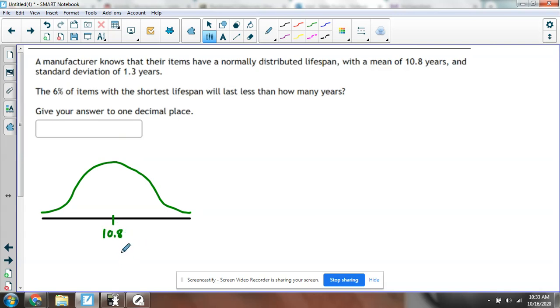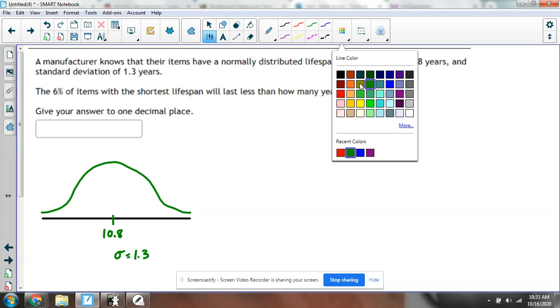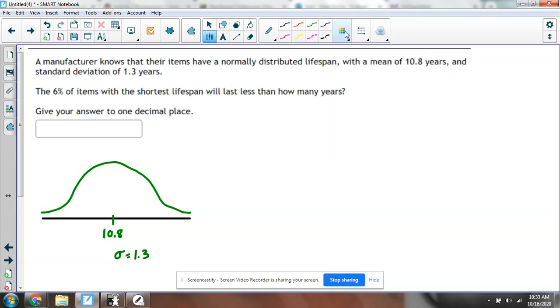I'm just going to write sigma down here so I know it's 1.3. It says the 6% of items with the shortest lifespan will last less than how many years? So the bottom 6%, I'm going to draw a vertical line here, call that x. I want to know what value that is that cuts off the bottom 6% or 0.06.